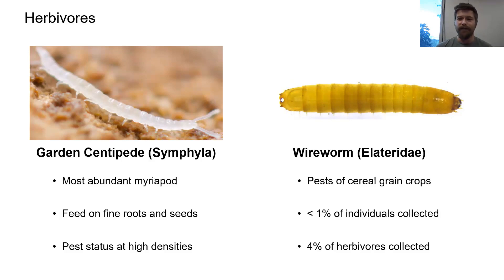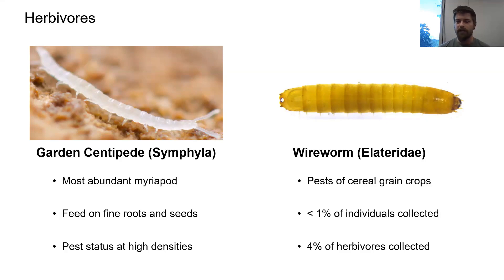Moving over to wireworms, or Elateridae — these are pretty well known to many producers here on the Palouse as pests of cereal grain crops. One piece of positive news: out of all our sampling of over 120,000 arthropods collected, wireworms represented less than 1% of all individuals collected and only 4% of the total herbivore functional group. While they are pests, we did not actually find them in large numbers throughout our sampling of numerous cereal crops over the past four years.